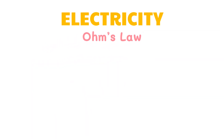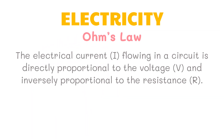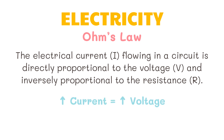Ohm's law states that the electrical current flowing in a circuit is directly proportional to the voltage and inversely proportional to the resistance. This means that if the voltage is increased, then the current will increase as long as the resistance doesn't change. If the resistance is increased and the voltage remains the same, then the current will decrease.